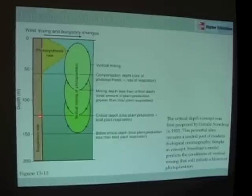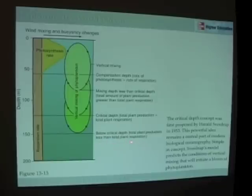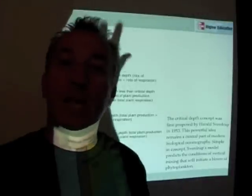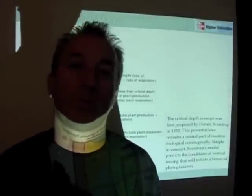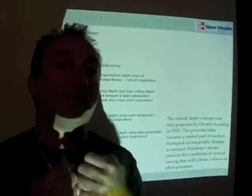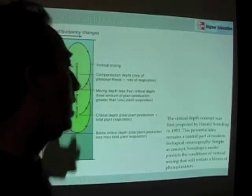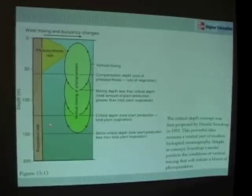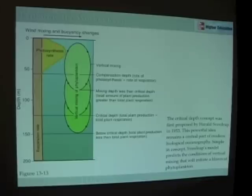The critical depth is the deepest to which a phytoplankton cell can be mixed and still maintain positive production. If cells get mixed below the critical depth, then total plant production is less than total plant respiration — an unsustainable state. Some cells will actually go into a kind of stasis, a kind of hibernation. They'll form a kind of spore called an oxospore, which allows them to survive when vertical mixing takes them very deep. Otherwise, as the mixed layer depth gets shallower and light increases in the spring, once phytoplankton cells get into this positive productivity area above the critical depth, a spring bloom will occur.